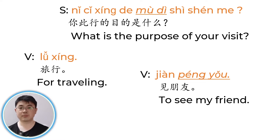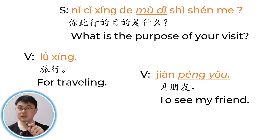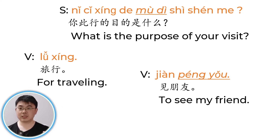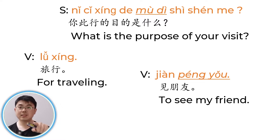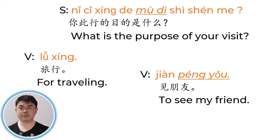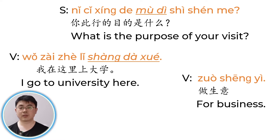您此行的目的是什么? 此行 means this trip. 目的 means purpose. 是什么 — 什么 means what. What is the purpose of this visit? Answer: 旅行 — for traveling. Another way: 见朋友. 见 means see or meet. 朋友 means friend or friends. 见朋友 — I come to see my friends.